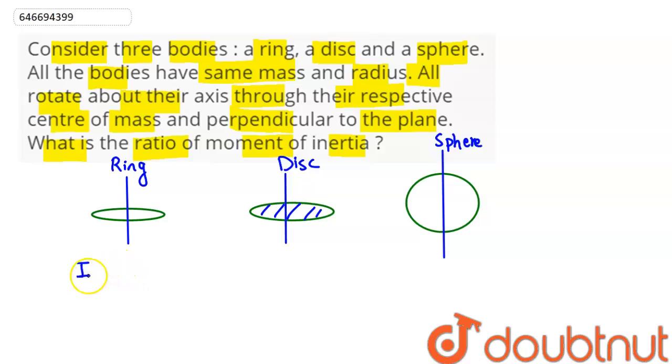So moment of inertia about center of mass and perpendicular to its plane - all have same mass and same radius r. So for the ring, we have moment of inertia as MR².